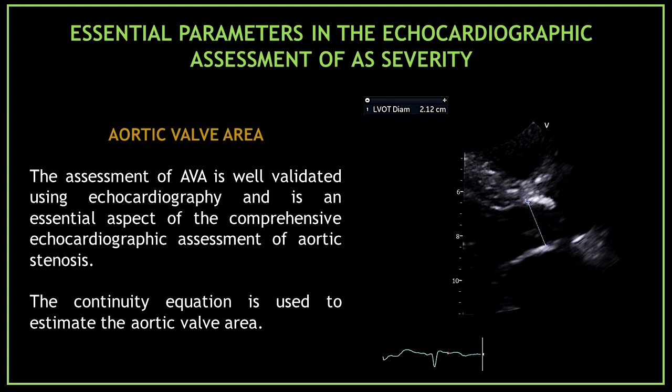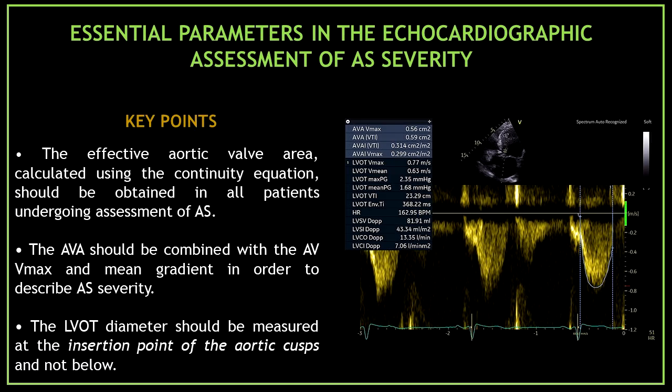The continuity equation is used to estimate the aortic valve area. Key points when measuring the aortic valve area: First, the effective aortic valve area calculated using the continuity equation should be obtained in all patients undergoing assessment of aortic stenosis. Second, the aortic valve area should be combined with the aortic valve maximal velocity and mean gradient to describe aortic stenosis severity. And third, the left ventricular outflow tract diameter should be measured at the insertion point of the aortic valve.